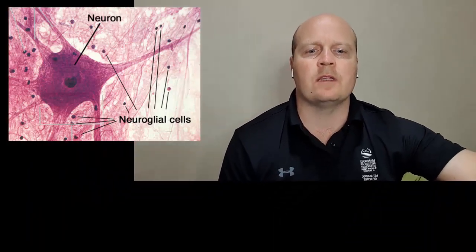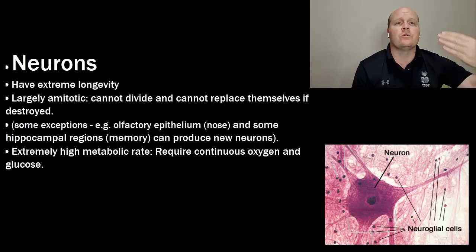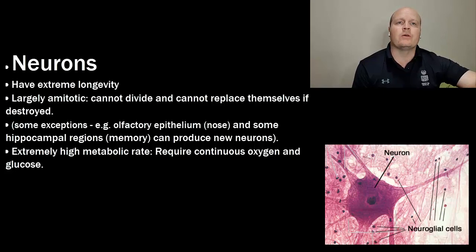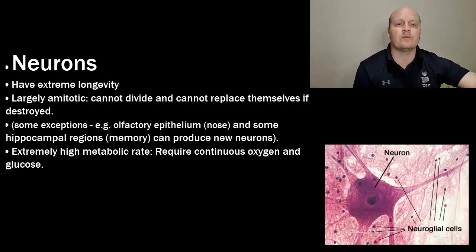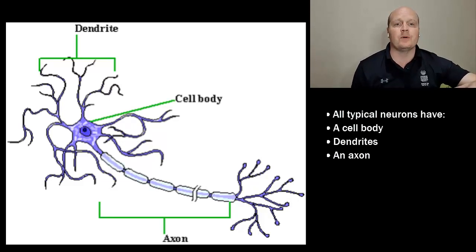Neurons have extreme longevity, so they can last for a long time with good nutrition. They're largely amytotic, which means they don't divide and they don't reproduce. There are some exceptions, but generally this is the case — which is a problem because if you have a spinal cord injury, head injury, or brain trauma, these things often can't heal. They have a high metabolic rate, which means they need a continuous supply of oxygen and glucose.